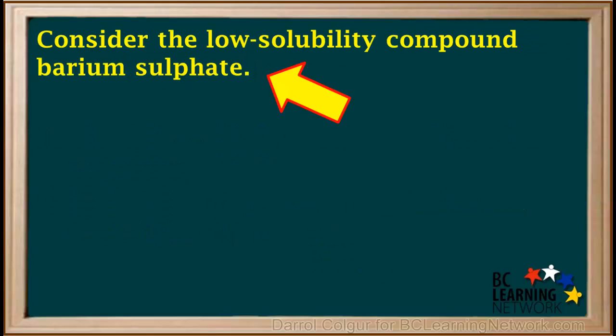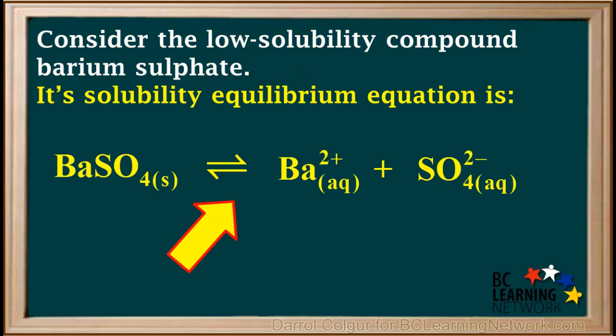As an example, we'll start by considering the low solubility compound barium sulfate. Its solubility equilibrium equation looks like this, with solid BaSO₄ on the left and its dissolved ions on the right. In the animation to follow, we'll represent the amount of each substance by the size of its text in the equation. Watch it closely.